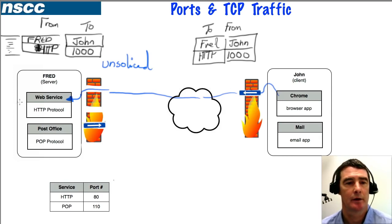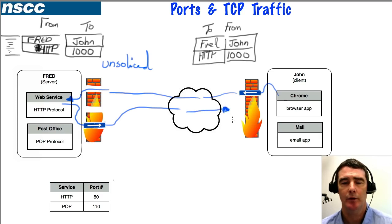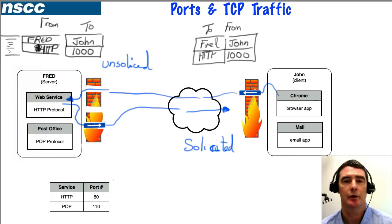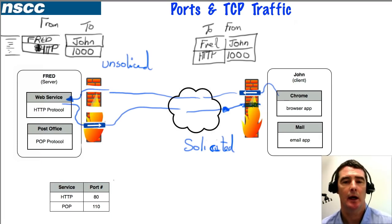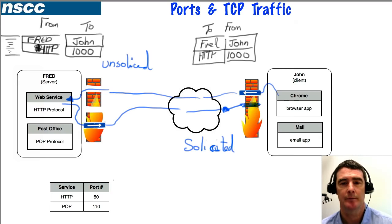That return traffic goes out through Fred's firewall, which allows everything out, and hits John's firewall. At this point the firewall inspects it and recognizes this as solicited traffic, because John sent a request to Fred from port 1000 earlier, and this is the traffic back using that same port 1000. The firewall allows solicited traffic through — we generally do not need a firewall rule for that. John's computer then sees port 1000 and knows that Chrome generated the earlier packets from that port, so it sends the response to Chrome rather than the email application.